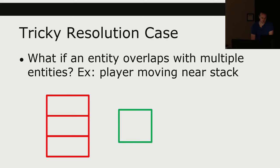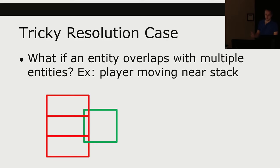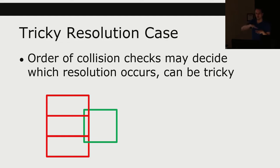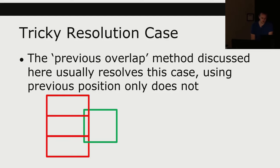There may be a tricky case if an entity is going to overlap with multiple entities. If we have a wall made out of tiles, it turns out that if we follow what I was saying, this will properly push it out to the side. But the order of collision checks is now going to matter — if we collide with the top brick first versus the bottom brick first, we might have a different outcome. Stacks of stuff usually isn't a problem. The previous overlap method discussed usually resolves these cases, but using the previous position only doesn't always.